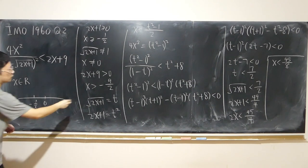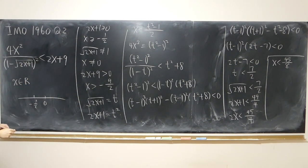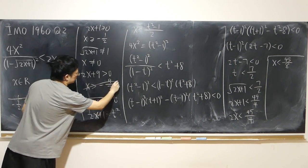And negative 9 over 2. Negative 4.5. Somewhere here. And to make sure x is bigger than this. Also bigger than that. I'm going to choose this one. Because this one already implies bigger than that one.